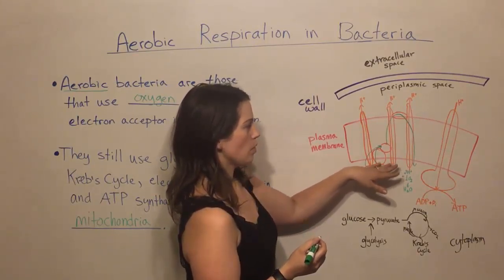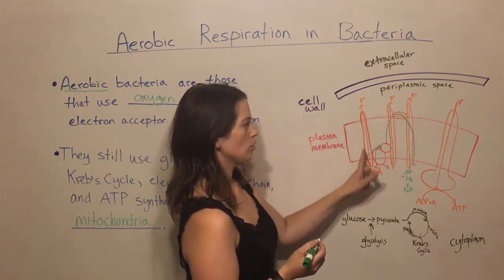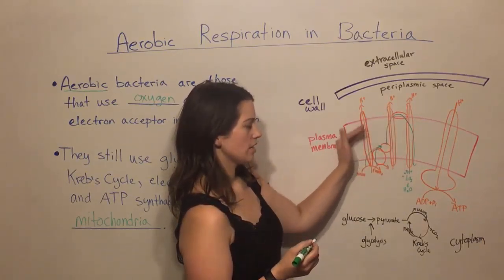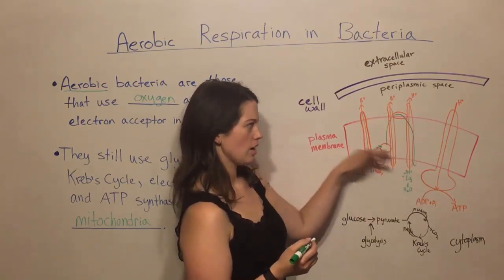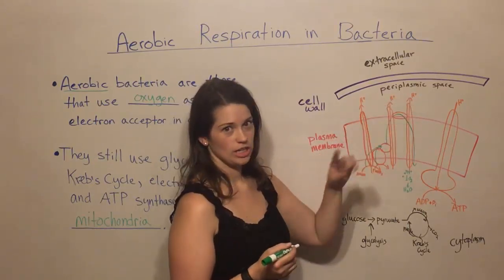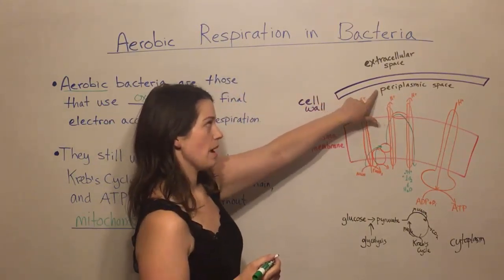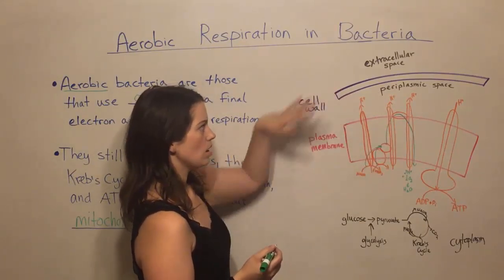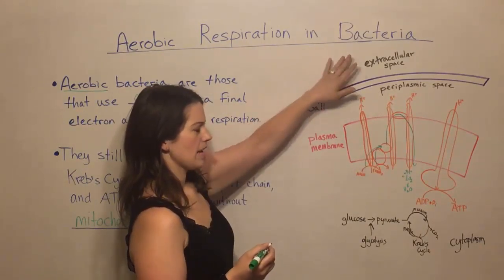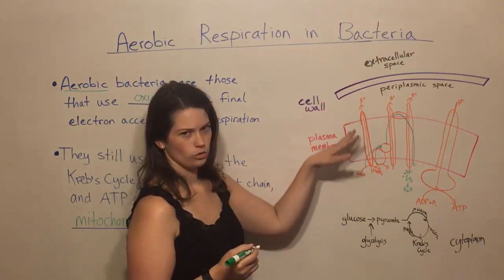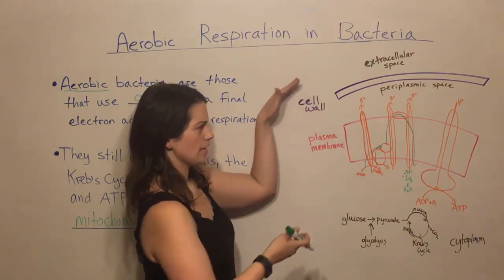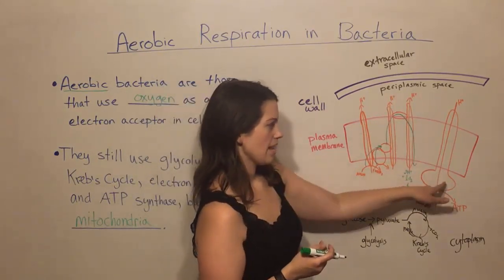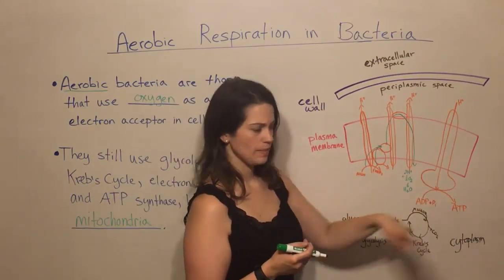You have the proton motive force building up. Those protons are being pumped across the membrane as the electron goes from a high energy state down the chain. The hydrogen ion concentration builds up in the space known as the periplasmic space, which is between the plasma membrane and the cell wall. Out here is the extracellular space. The plasma membrane is not drawn to scale here — I've made it larger than the cell wall so we can see the proteins that are present.